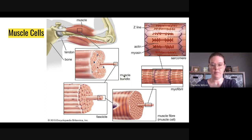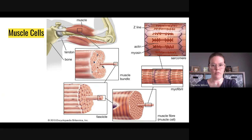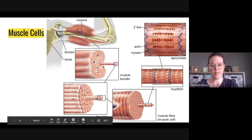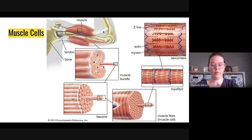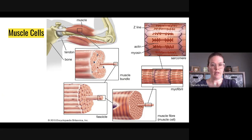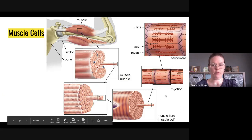In our bodies, tendons connect muscles to bone. A single muscle cell extends through a fascicle — each fascicle has a bunch of muscle fibers, and a muscle fiber is also known as a muscle cell. A single muscle cell extends from one end of the tendon to the other where it connects to bone. They're extremely long, have lots of nuclei, and lots of mitochondria. Cellular respiration is super important for a muscle fiber.